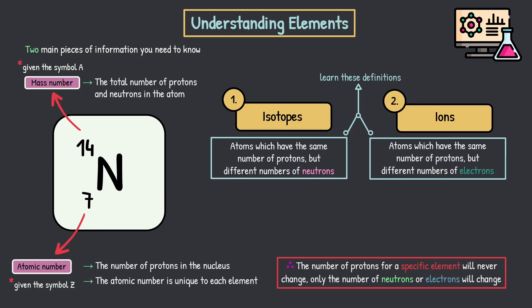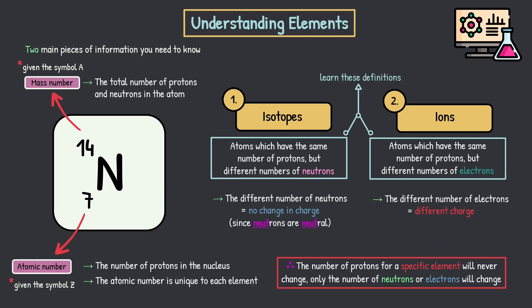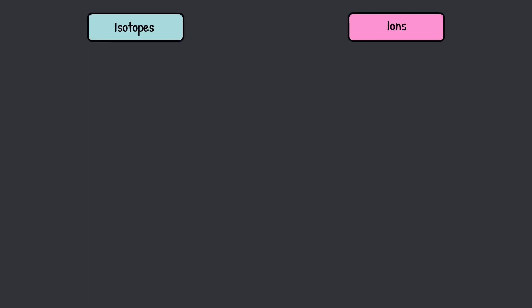Now we have to consider their charge. When we're looking at isotopes, the different number of neutrons equals no change in the overall charge since neutrons are neutral — it's literally in the word. Whereas when we come to ions, the different number of electrons equals a different charge. This is simply because electrons have a minus one charge overall, so if you change the number of electrons in any way, it's going to change the overall charge. Right, so that's the basics out of the way. Let's look at these in far more detail.